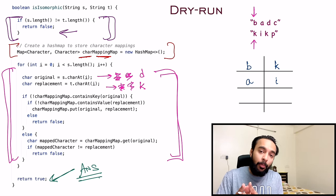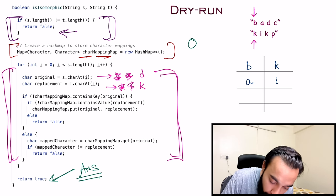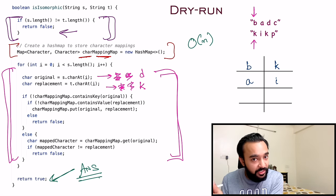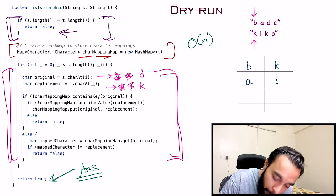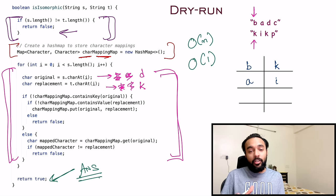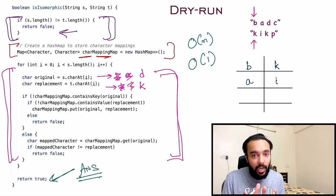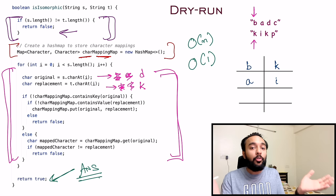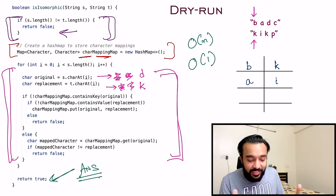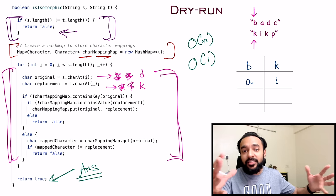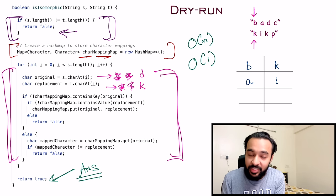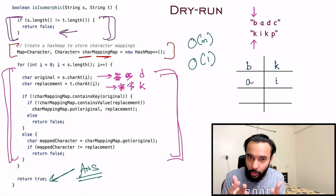The time complexity of this solution is O(n) because you iterate through the original string. The space complexity is O(1) because you need only constant space in your hash map — since the characters are ASCII characters, the maximum size of the hash map is 256, which is constant space.